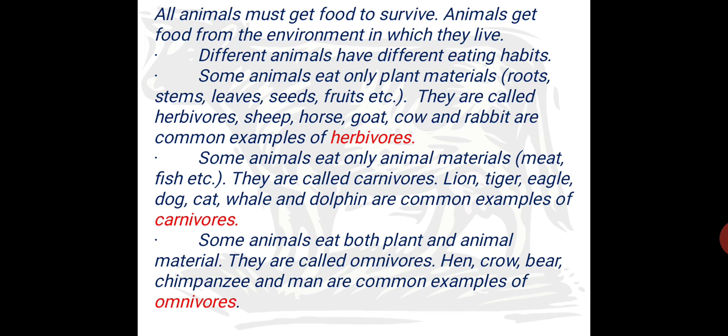We all know children, all animals must get food to survive because without food, any living being cannot survive. Can we survive without food, without water? No, never. So animals get food from the environment in which they live. This is the environment we live in and in this environment only we get our food. And above all children, different categories of animals have different eating habits. Isn't it? We are having different eating habits, birds have different eating habits, animals also have different eating habits.